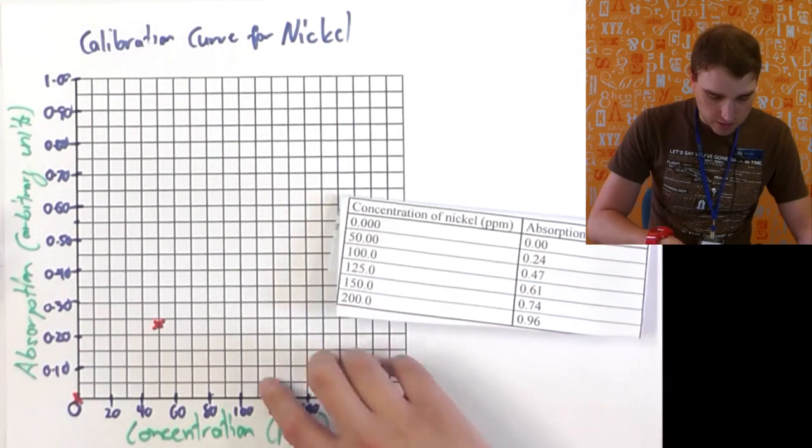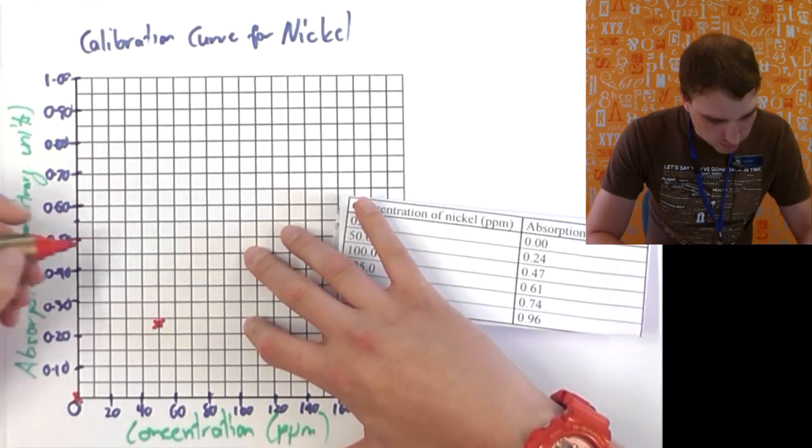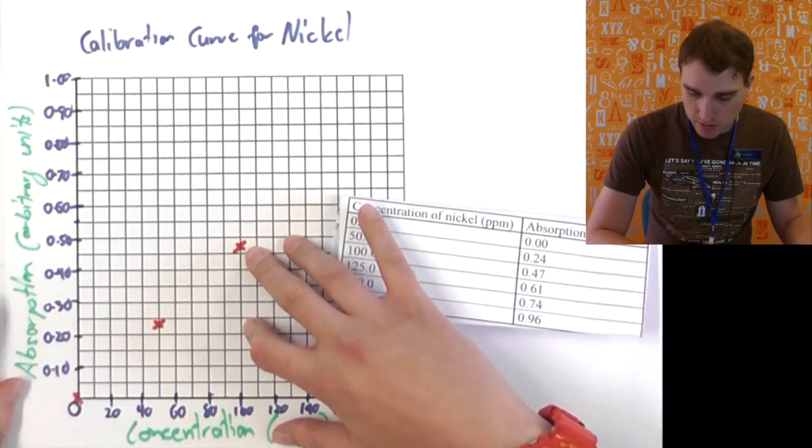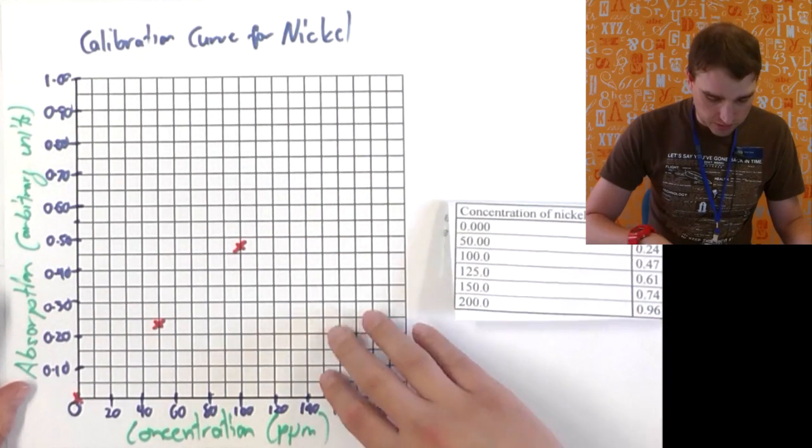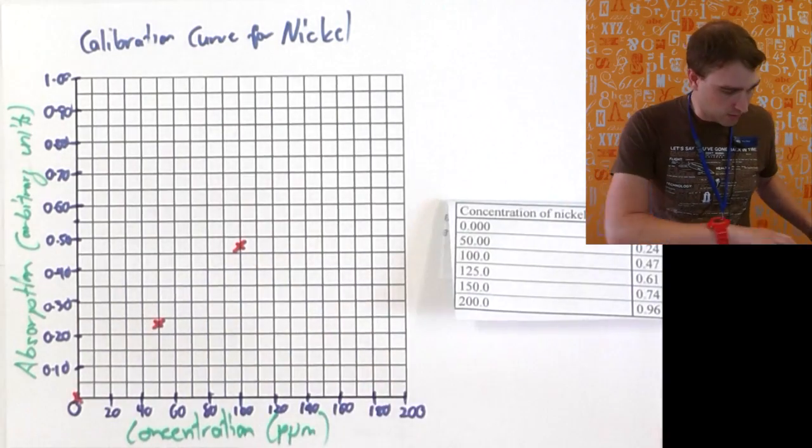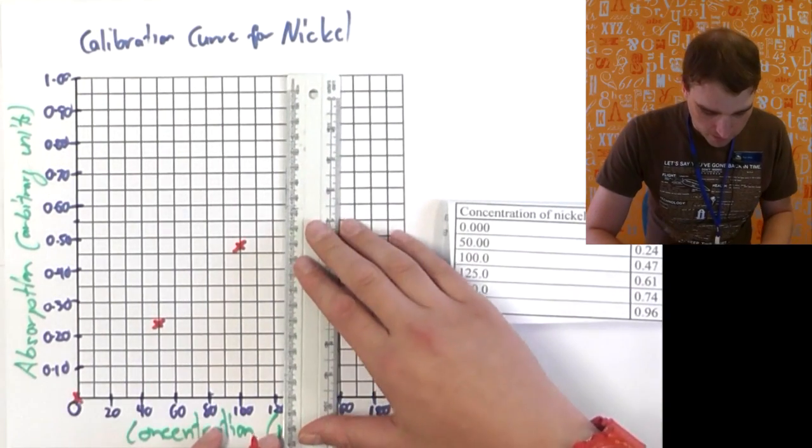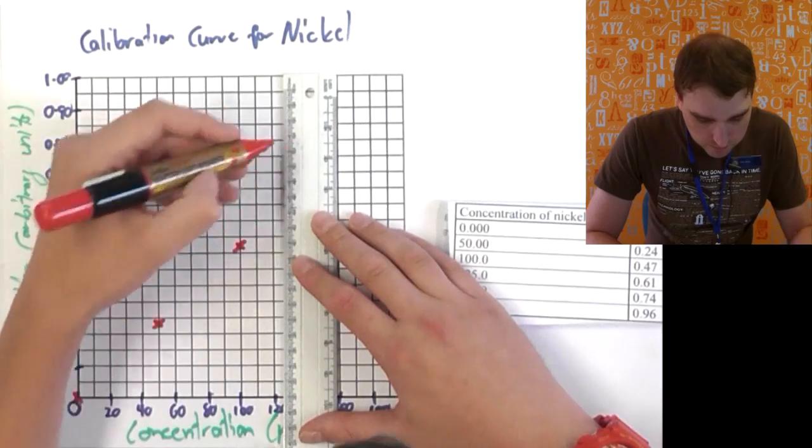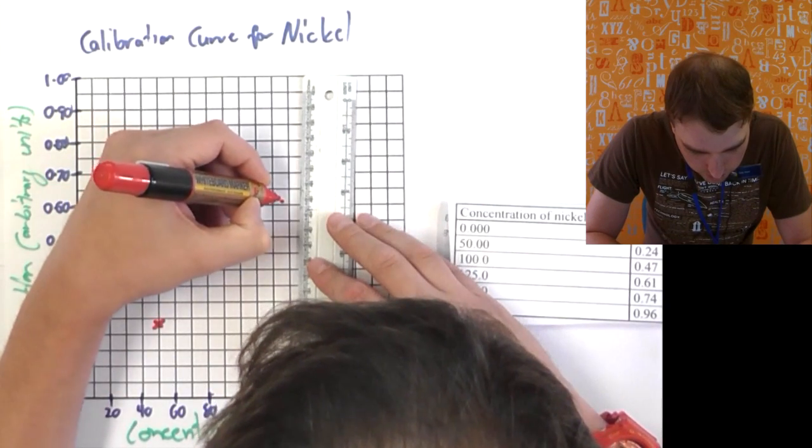Next one is 100, 0.47, so 100, 0.47, a little bit below half. Next one is 125, 0.61, so 125 is around halfway there. If you can grab a ruler to help me. So 125, 0.61, so there's another there.